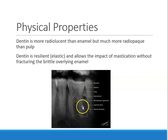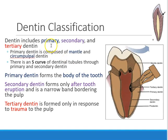So enamel is radiopaque and pulp is radiolucent — dentin is right in between. Now there are three types of dentin: primary, secondary, and tertiary. Let's look at all of them.